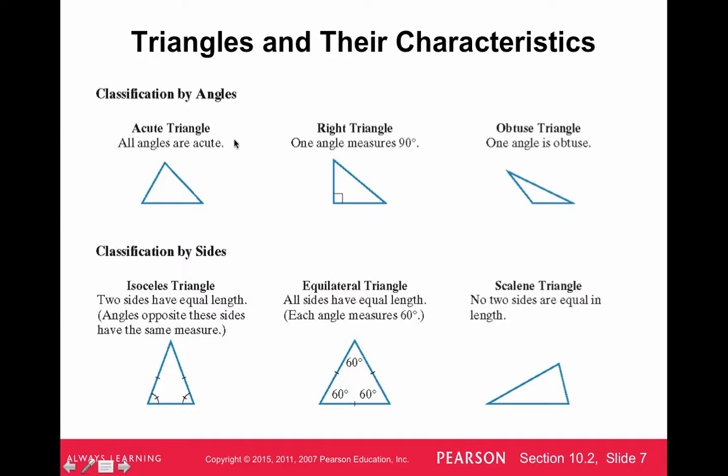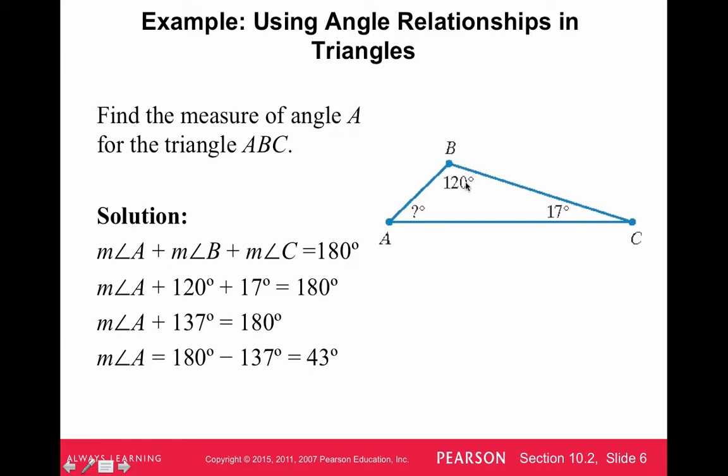Just some useful information. It's not something I necessarily test over, but classification of angles of a triangle. The big one that we're going to look at is a right triangle, when we're using the Pythagorean theorem. You'll see this notation with a little square in there, noting that it's a right angle, which forms an L here. An acute triangle is where all angles are acute, and an obtuse triangle is where one angle is obtuse, like this one, an obtuse angle of 120 degrees.